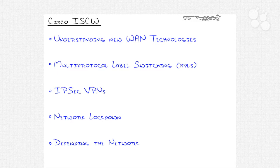This is far more than a wide-area network course — this is a security curriculum. For those of you that have thoughts about getting into the CCSP track and pursuing security certifications, taking this will give you a huge head start because you're going to see a ton of overlap. Those three major sections — VPNs, locking down the network, and defending the network — comprise a large chunk of the first two certification exams for the CCSP: SND and SNRS. You'll see exactly identical topics covered in both.